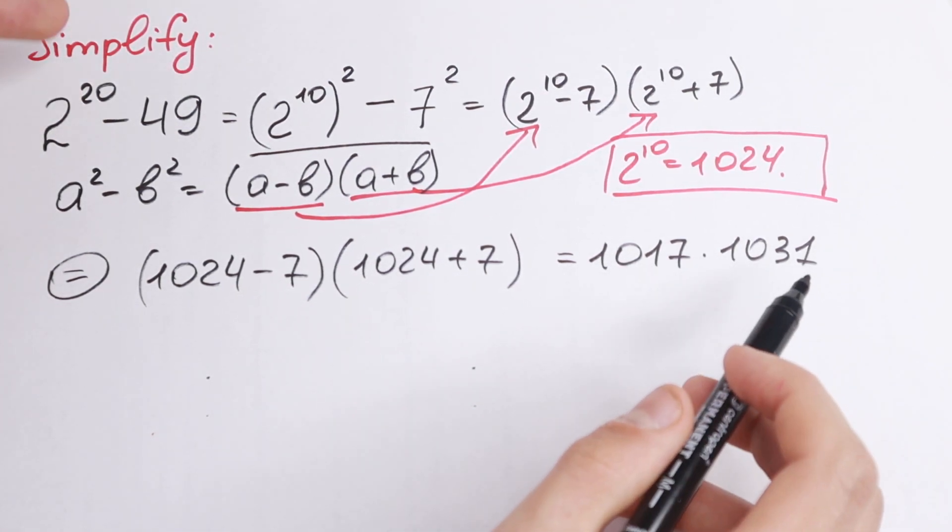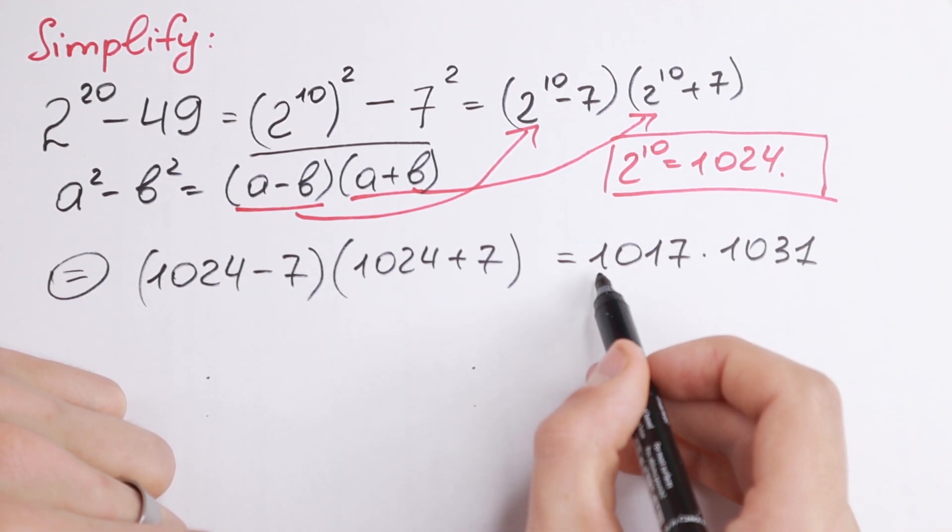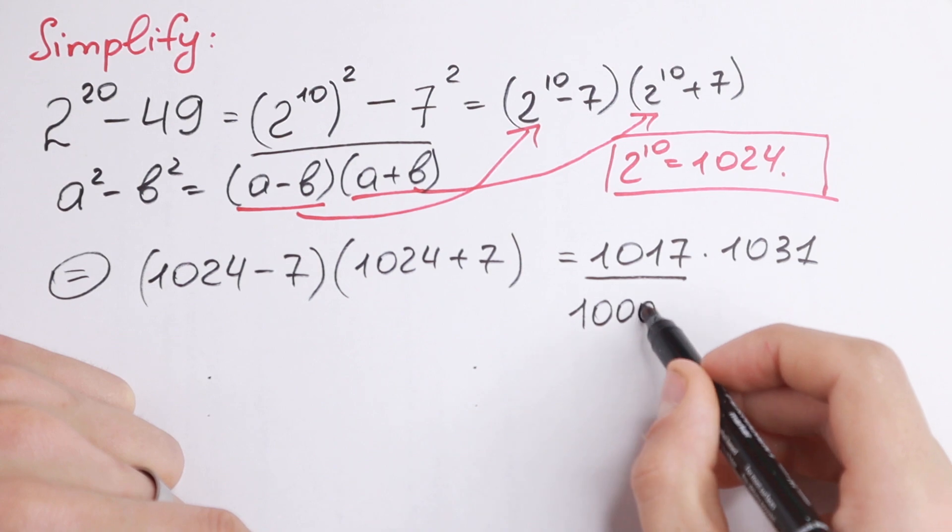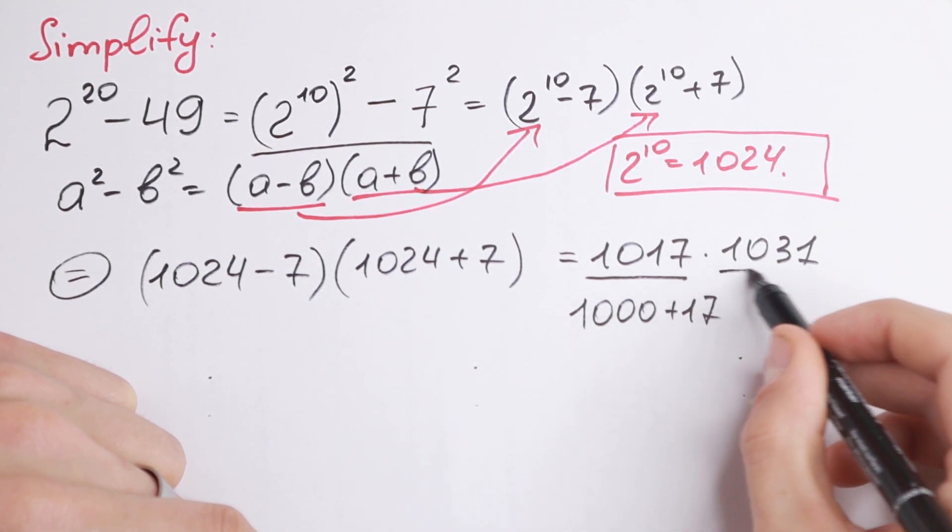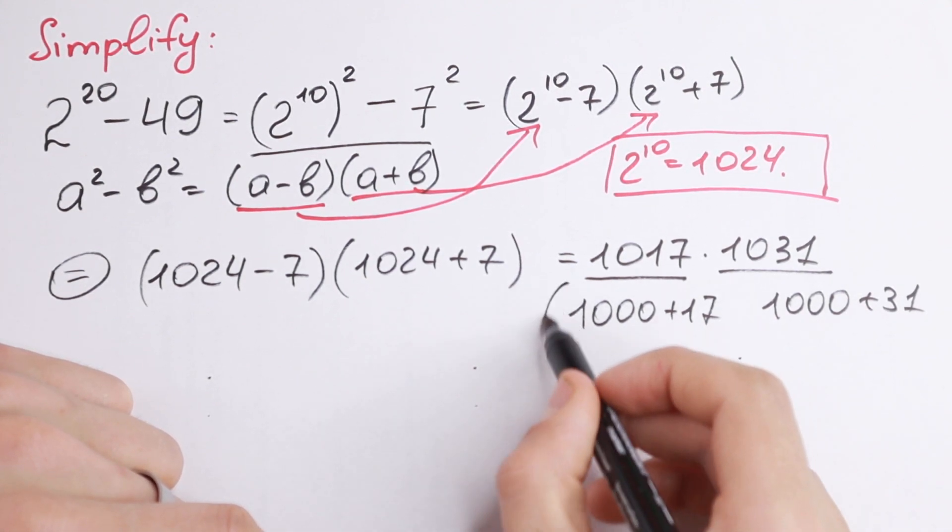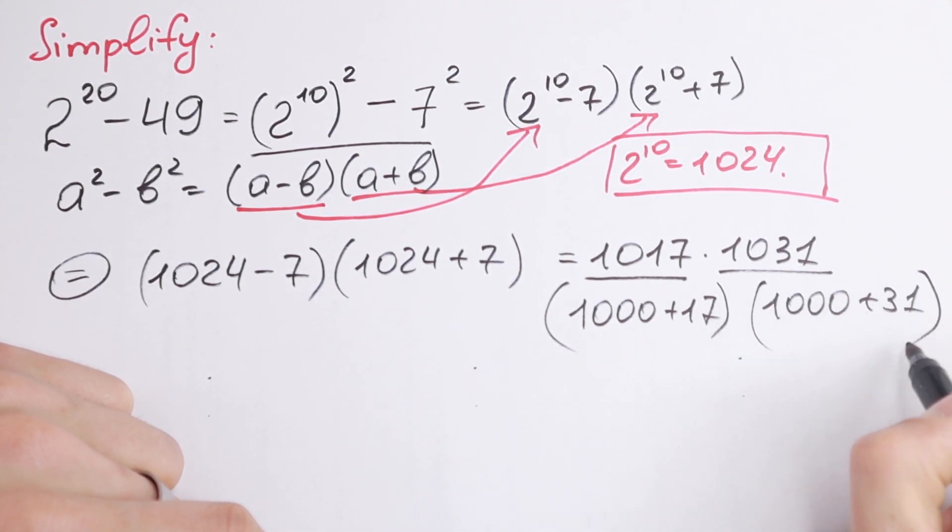If we multiply this product, we will have our answer that we had in the beginning. But how can we multiply that? We can write this 1017 as 1000 plus 17 and this 1031 as 1000 plus 31. And let's multiply this.